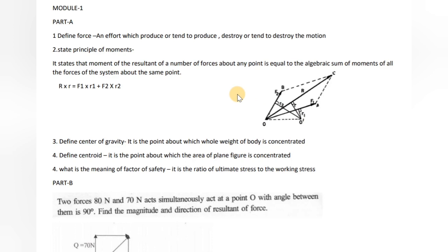Next: Define Center of Gravity and Centroid. The Center of Gravity of a body is the point about which the whole weight of the body is assumed to be concentrated. The Centroid is the point about which the area of the plane figure is assumed to be concentrated. Center of Gravity refers to a three-dimensional body, while Centroid refers to a plane area — both are points where mass or area is assumed to be concentrated.